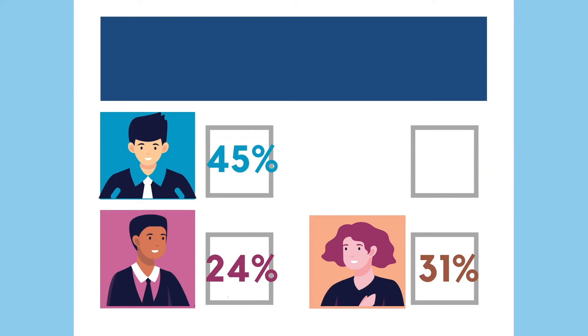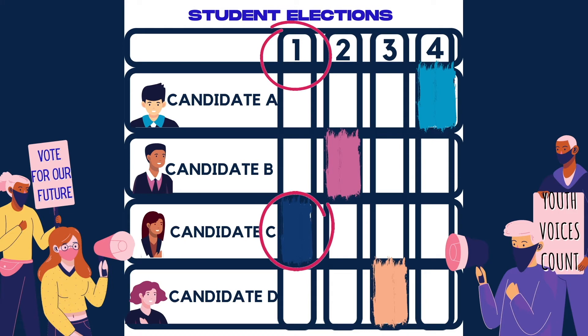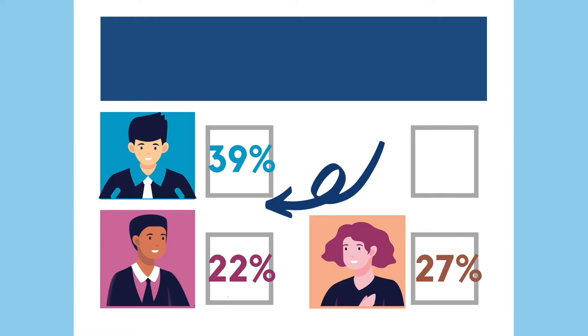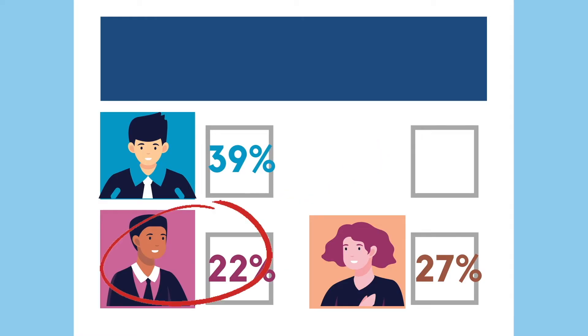Since you voted for Cassie first, that doesn't mean your vote is now useless. Instead, when your top choice candidate is eliminated, your vote goes on to the next highest ranked candidate. So for the student body race here, your vote goes from Cassie to Brian. Brian now receives your vote for the next round.